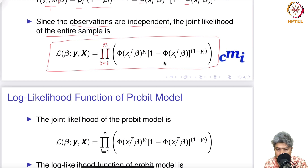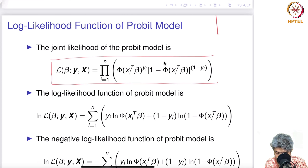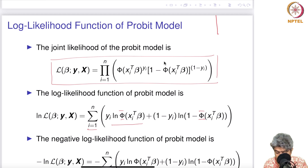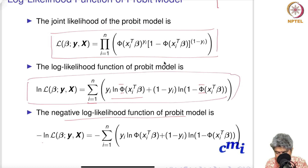Once you have the likelihood function of the probit model, you can write the log likelihood. Taking the log gives: summation of y_i times ln Φ(x_i^T β) plus (1 minus y_i) times ln(1 minus Φ(x_i^T β)). You can also write the negative log likelihood of the probit model, which is just the log likelihood multiplied by minus 1.